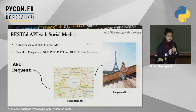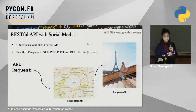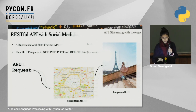For example, if you make an API request with a location to the Google Maps API, you could look at Paris and get GPS coordinates. From those GPS coordinates, you can interact with the Instagram API to get pictures with those locations. But I'm going to focus specifically on Twitter.